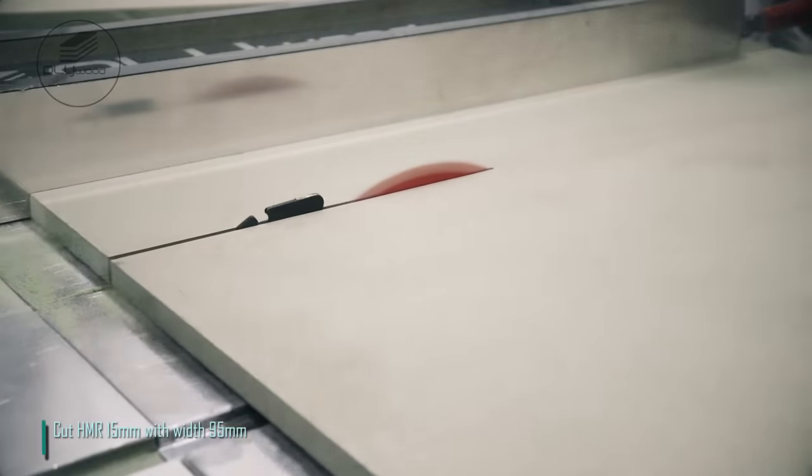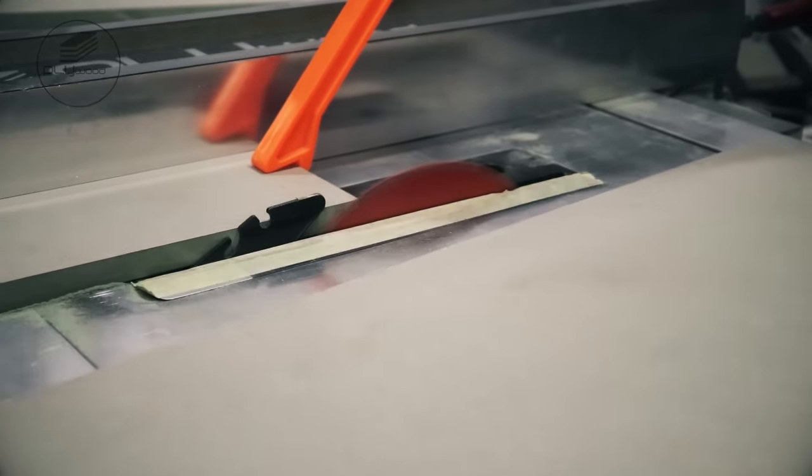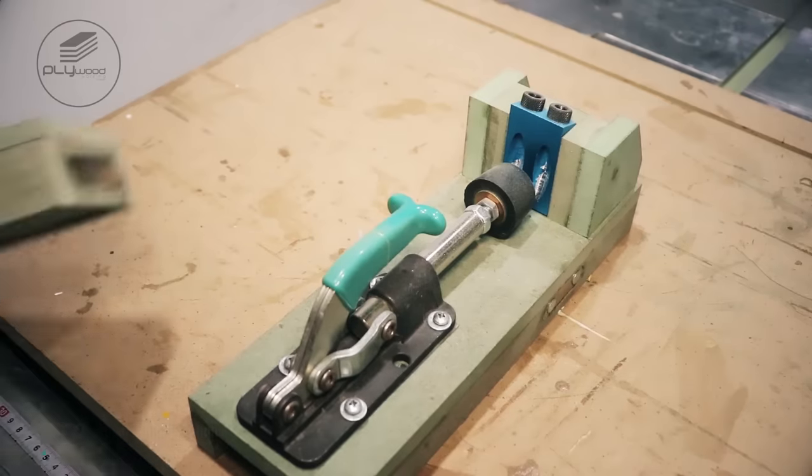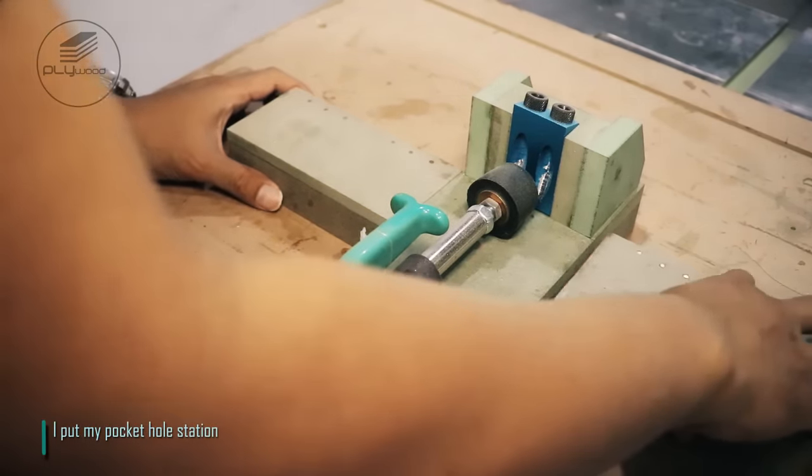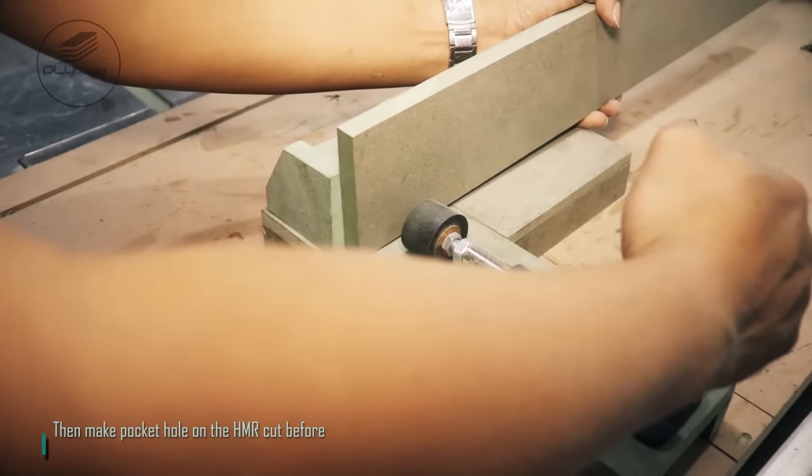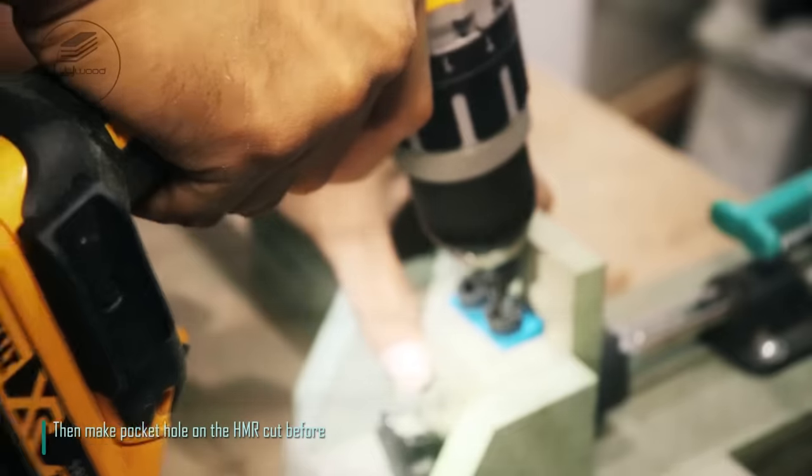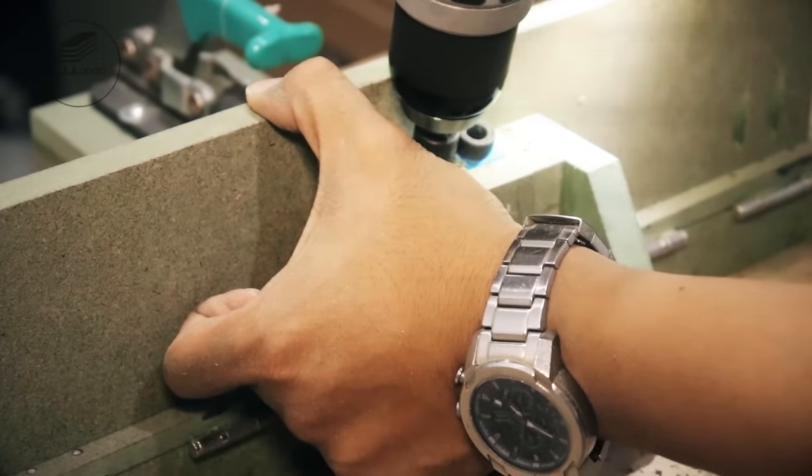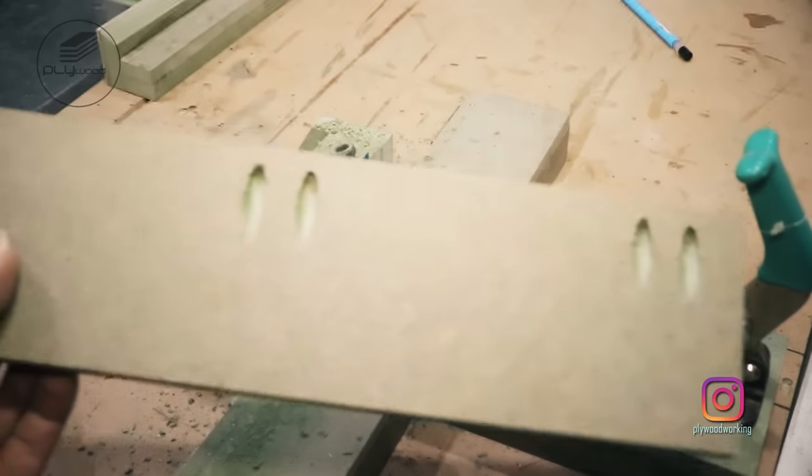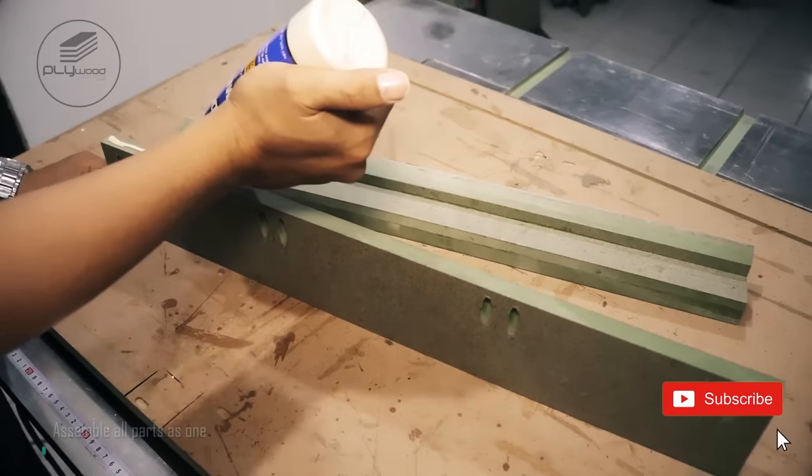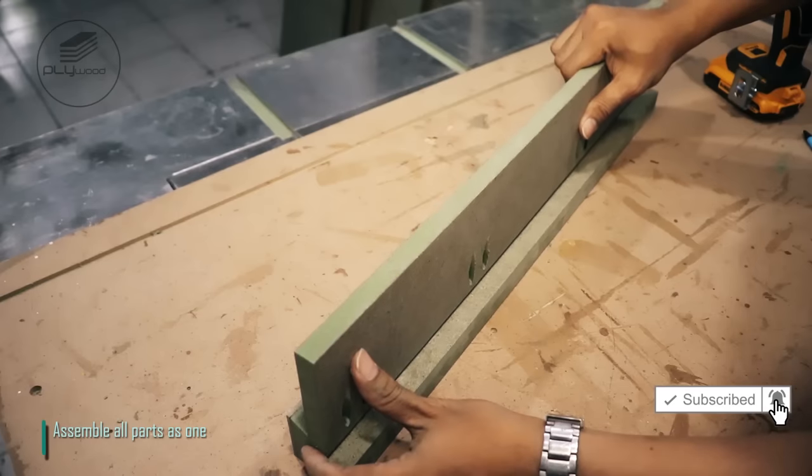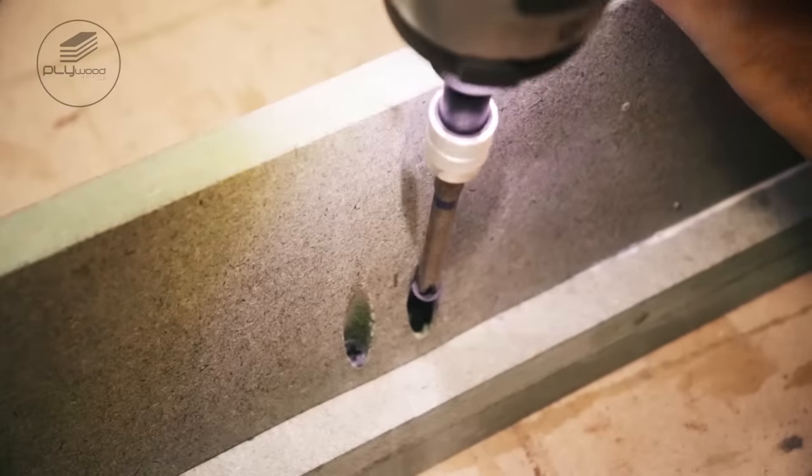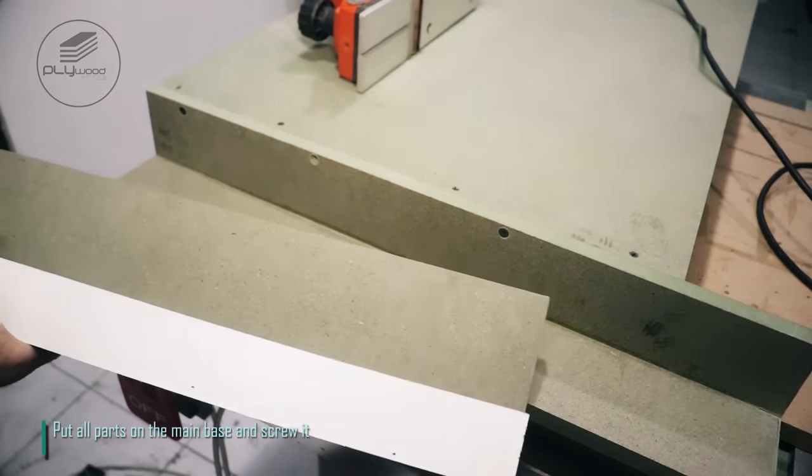Cut HMR 15 mm with width 95 mm. Then make pocket hole on the HMR cut before. Assemble all parts as one. Put all parts on the main base and screw it.